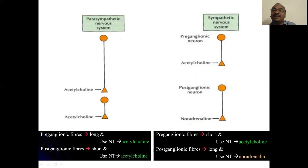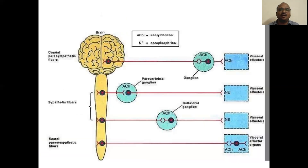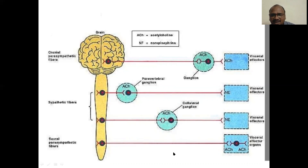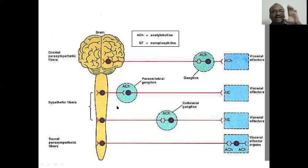Whereas here at the end — the postganglionic fiber releases noradrenaline. Acetylcholine-noradrenaline system. Now by seeing this diagram, this is the craniosacral — craniosacral outflow. Here you can see ganglia — acetylcholine. Here also, acetylcholine. In the sacral, acetylcholine, and here also acetylcholine. Very long preganglionic. Postganglionic is short. Now in the thoracic — sympathetic system. Very short preganglionic — acetylcholine. Here also preganglionic — acetylcholine only. But at the postganglionic, noradrenaline will be released.